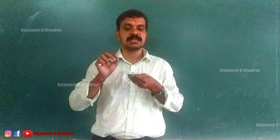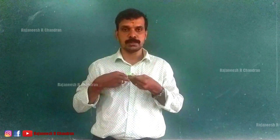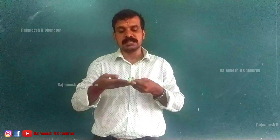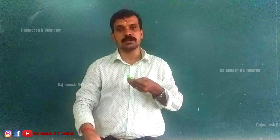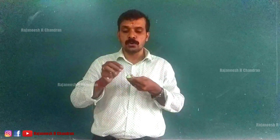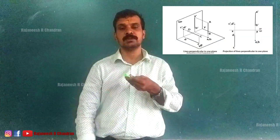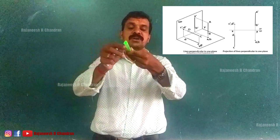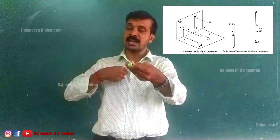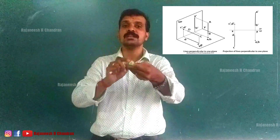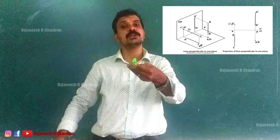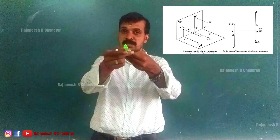At this moment we can say the line is perpendicular to VP. Whenever a line becomes perpendicular to VP, it automatically becomes parallel to HP. So you can see that when a line is perpendicular to one of the reference planes, the projection of the line on that plane will become a point, and the projection of the line on the opposite plane will show the true length and will be perpendicular to the XY line.